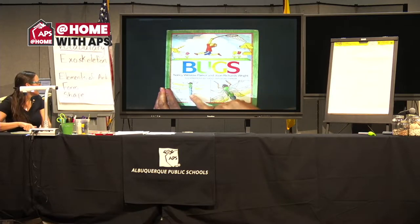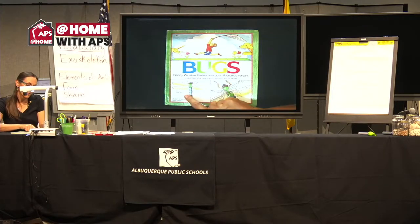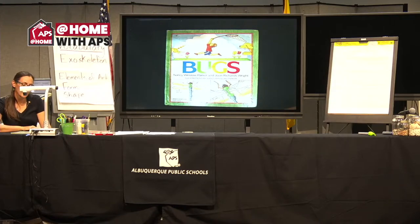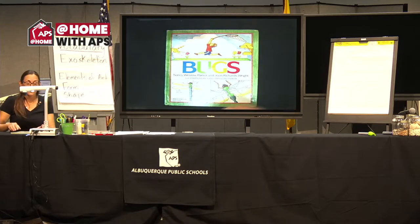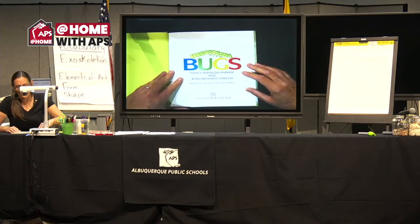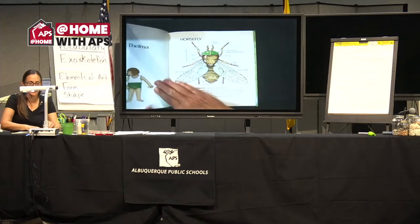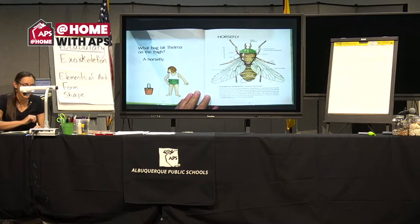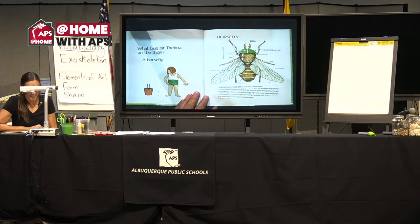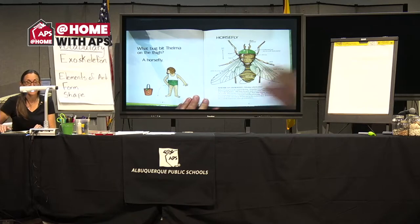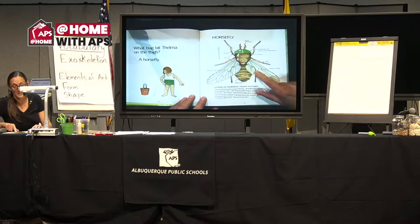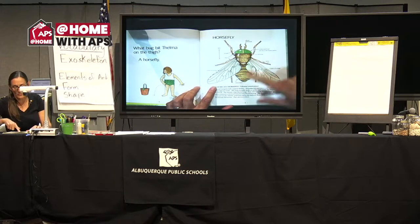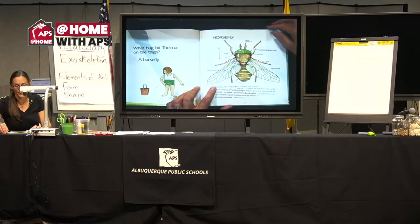I really love this book because it gives a lot of the scientific parts and words for the different types of bugs. I'm probably not going to read all of it, but it'll be here for you to look at. What bug bit Thelma on the thigh? A horse fly. I don't know if you've ever seen a horse fly, but they're pretty big — I've been bitten by one and it's not too fun. Look at all the parts: it has wings, it has antennae, legs.